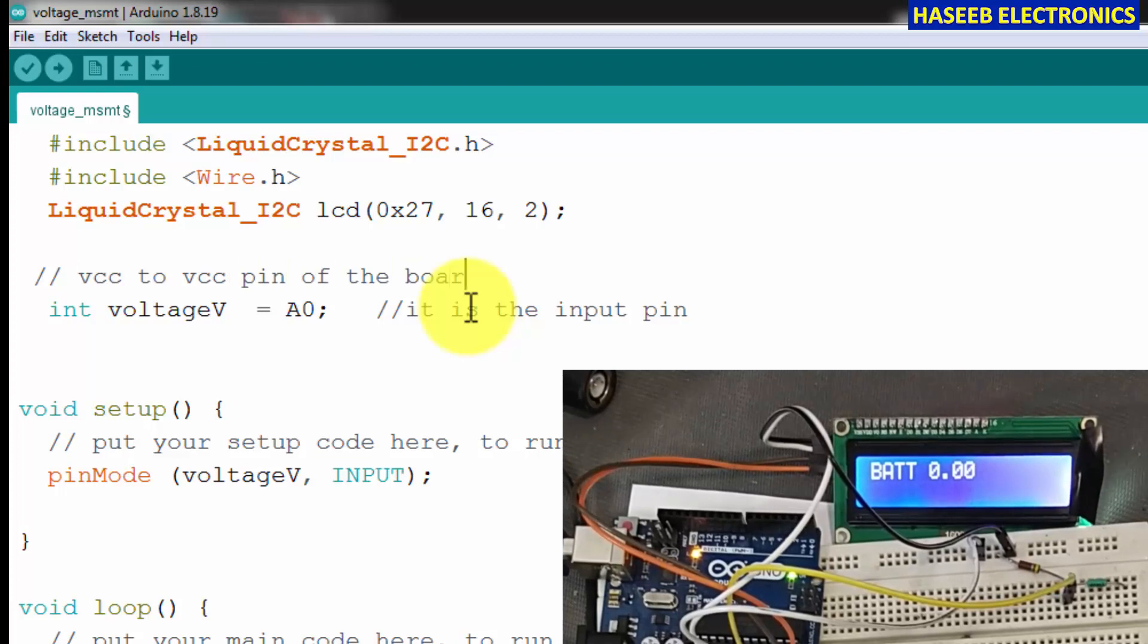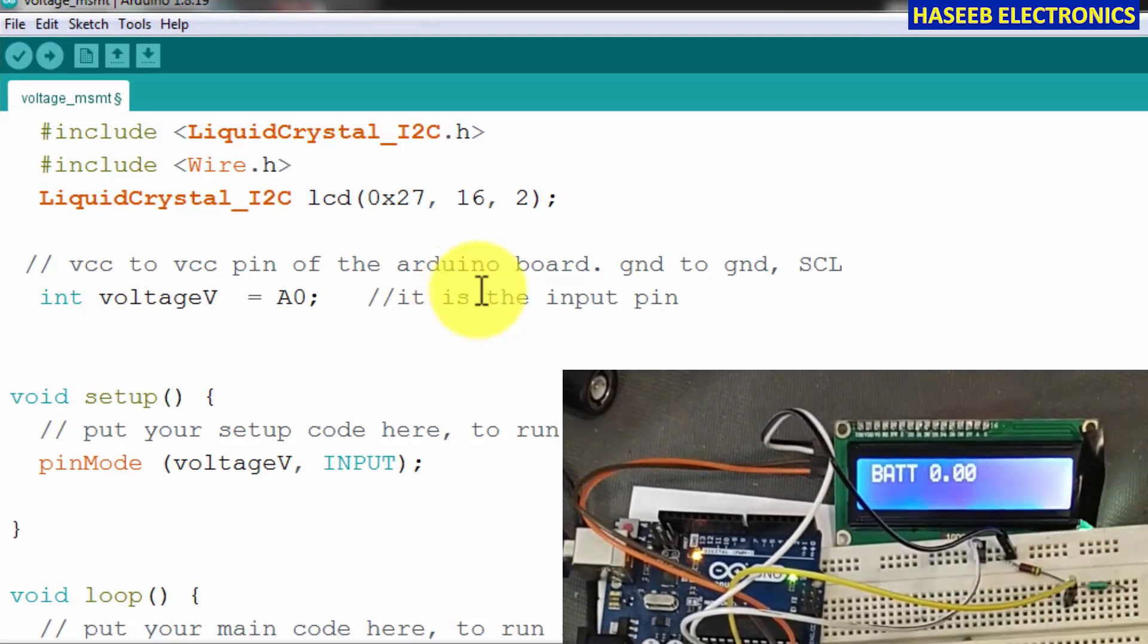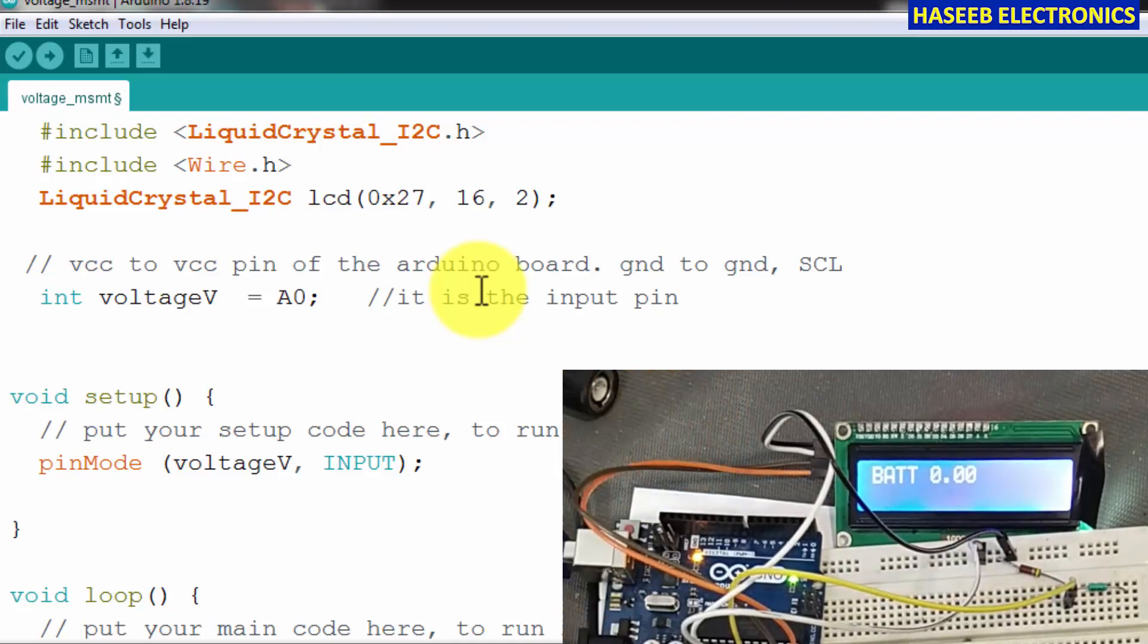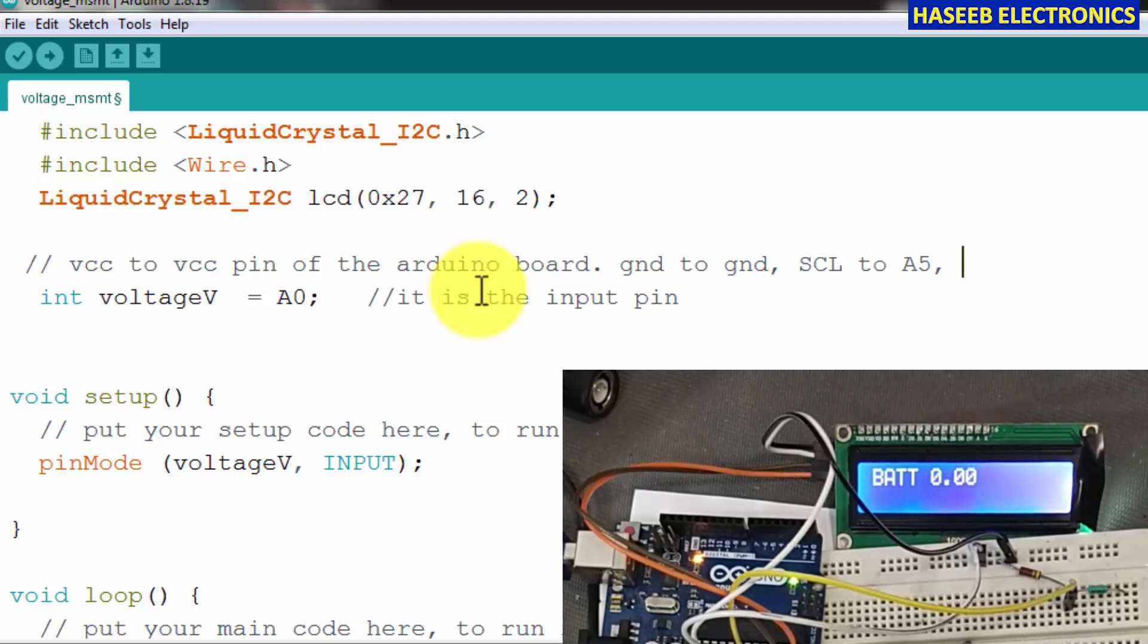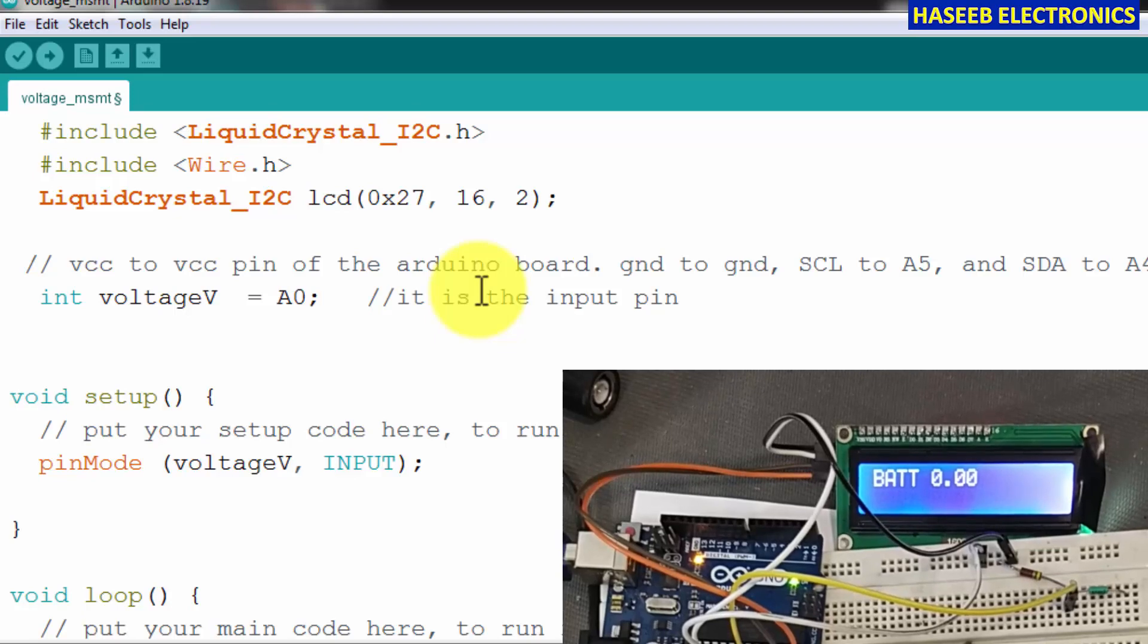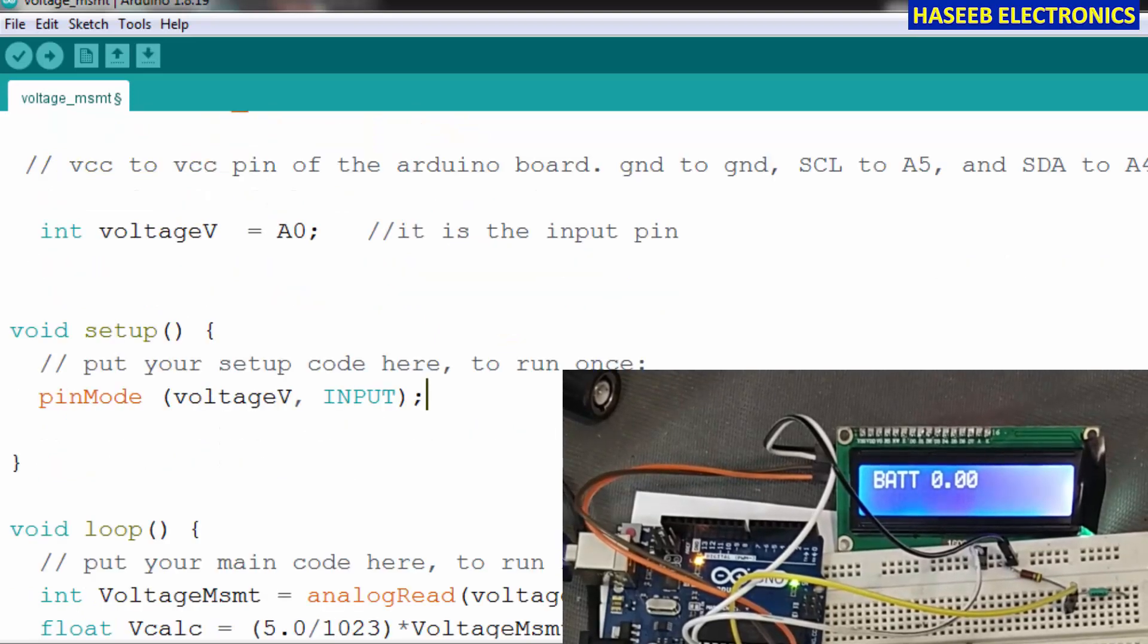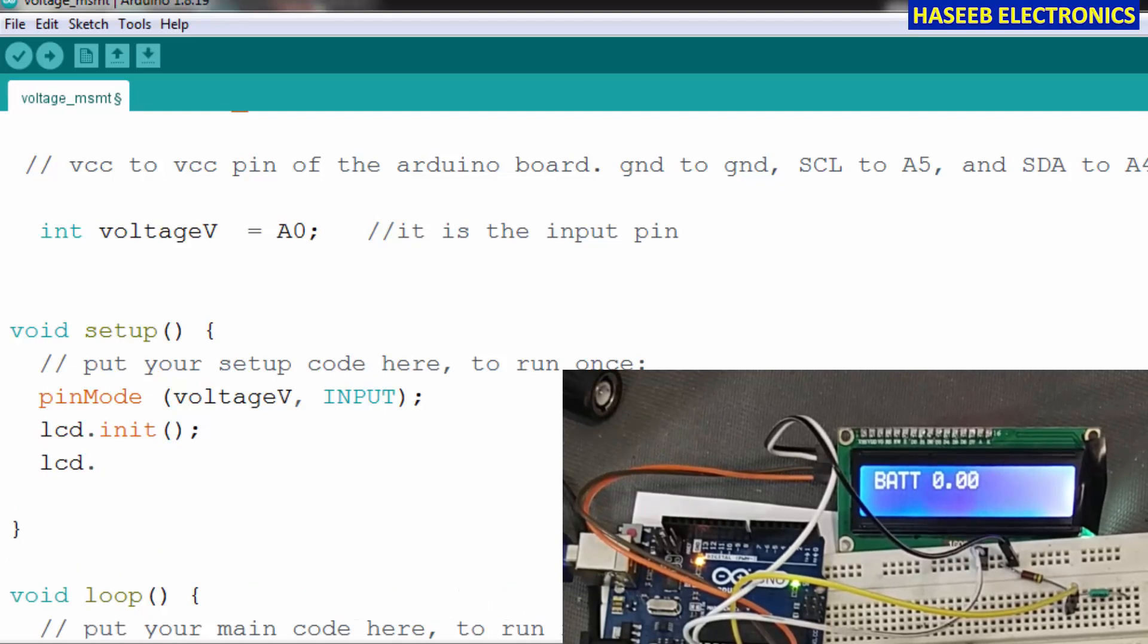SCL pin, SCL of this pin, that is the orange wire, it will go to A5 pin of the board. And SDA pin to A4 of the Arduino. The first handshaking we will do here: lcd.init, so it will start communication. Then lcd.backlight. Here we initialize the LCD.